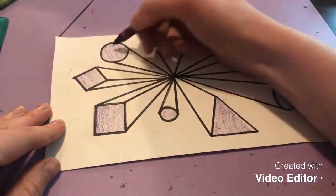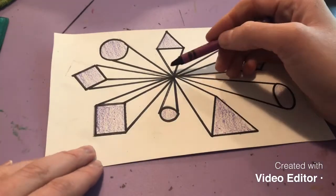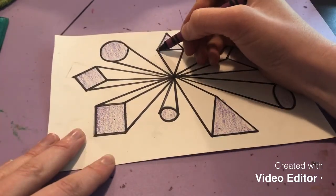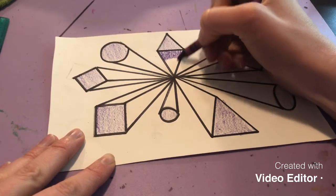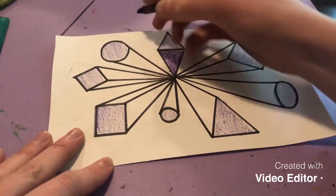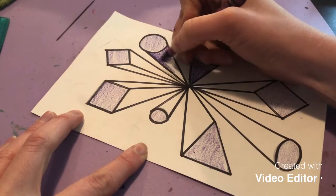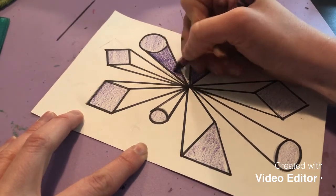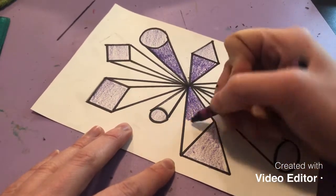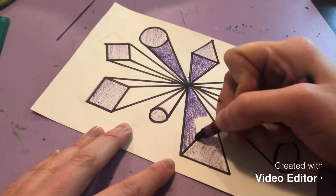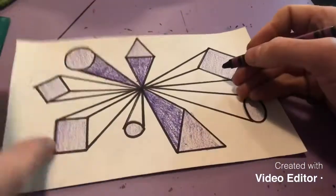Okay so after you do that some of the shapes you'll notice just have one side. So I'm going to make that one side a little bit darker.